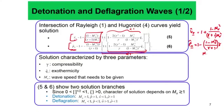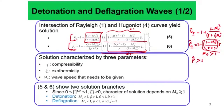Now let us consider the situation when mu is greater than 1. When mu is greater than 1, this 1 minus mu-squared is inherently negative. So when mu is greater than 1, this whole thing is essentially negative, and you have p_cap essentially greater than 1.